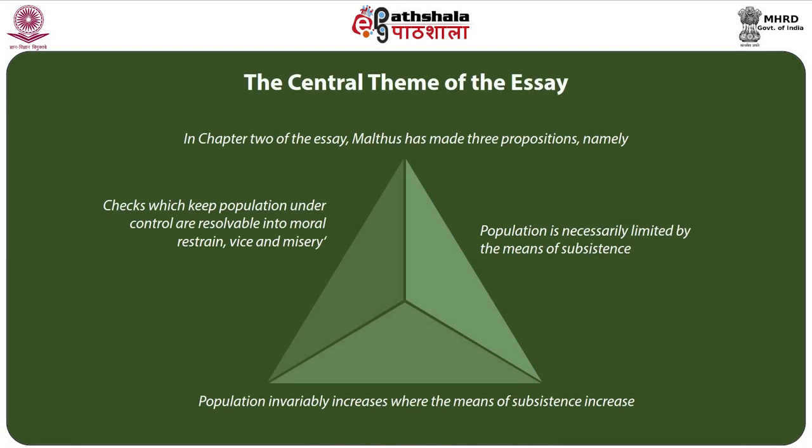His arguments were further modified in the sixth edition of his essay. In Chapter 2, Malthus made three propositions: one, population is necessarily limited by the means of subsistence; two, population invariably increases where the means of subsistence increases, unless prevented by some very powerful and obvious checks; and three, these checks, which keep population under control, are resolvable into moral restraint, vice, and misery.